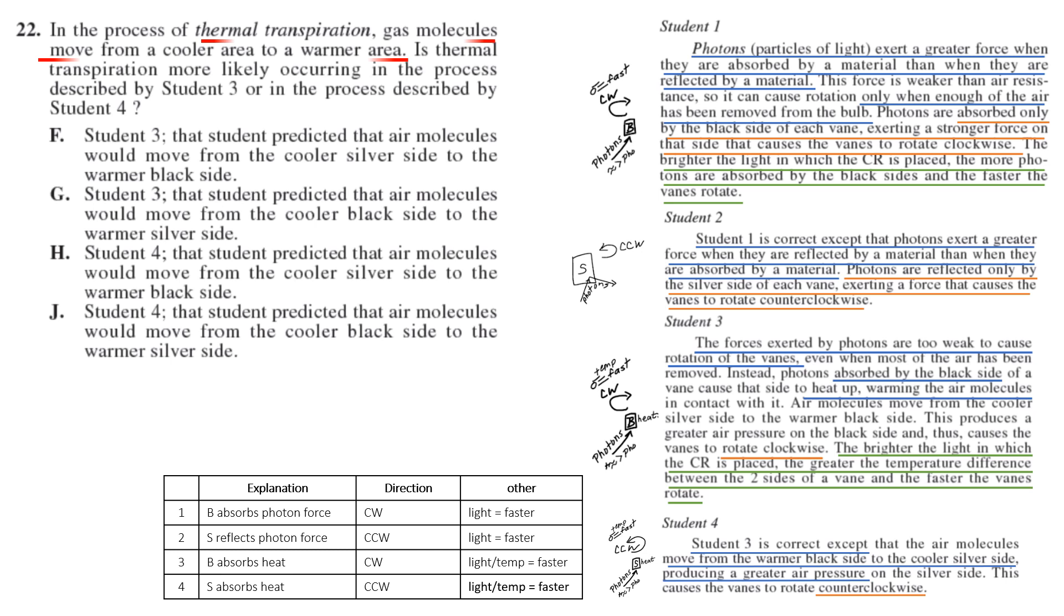In 22, we have thermal transpiration in italics. Anytime you see italicized words in the question, it's new information. Gas molecules move from a cooler area to a warmer area. That's thermal transpiration. Cool to warm. Is thermal transpiration more likely occurring in the process described by student three or student four? We know, just looking at the questions, we can eliminate choice G and H, I mean G and J, because they say the cooler black side, which the black side is what's absorbing the heat. So we can eliminate G and J. Then we get to say, which one is correct? What even says in the reading? Molecules move from the cooler silver side to the warmer black side. So F, it just explains it directly in the reading.